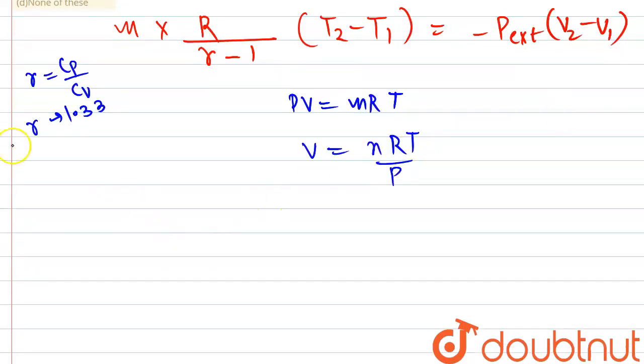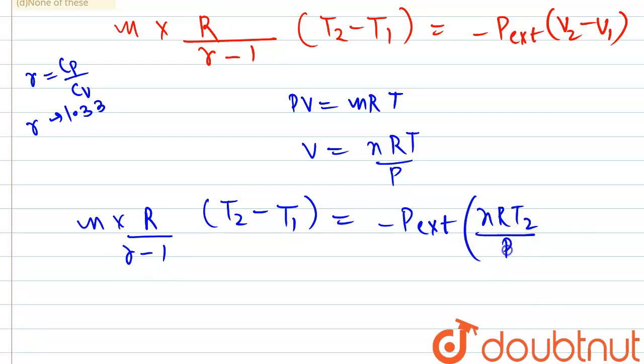And it finally becomes n into R divided by gamma minus 1, T2 minus T1, is equal to minus P external times nRT2 divided by P2 minus nRT1 divided by P1.